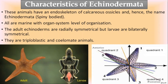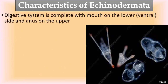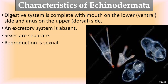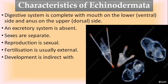They are triploblastic and coelomate animals. The digestive system is complete. They have a ventral and dorsal side - they are dorsiventrally flattened. The mouth is present on the ventral side and the anus is present on the dorsal side. The excretory system is absent - no specific excretory system. Sexes are separate. Reproduction is only by sexual method. Fertilization is external, taking place outside the body in water. Development is indirect as they involve free-swimming larvae.